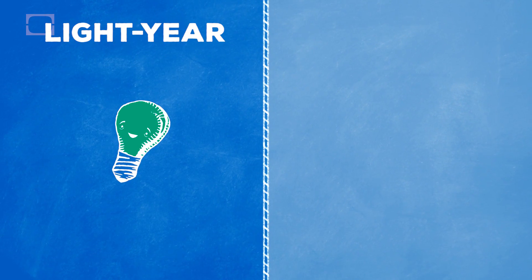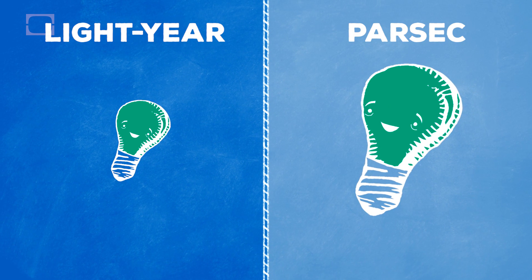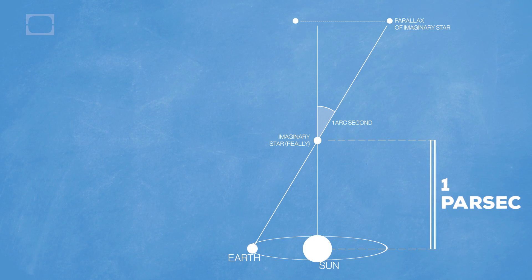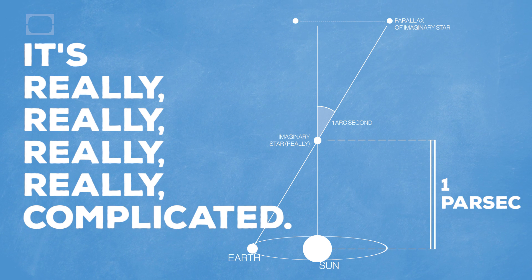There is also something even bigger than a light year called a parsec. It's about 3.26 light years. The parsec was made as another shortcut for measuring even larger distances.